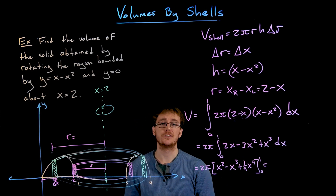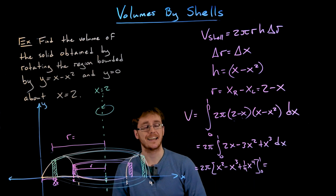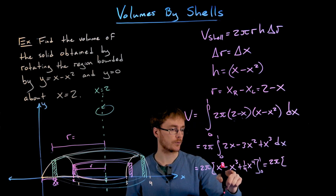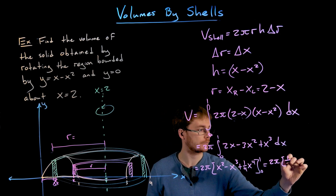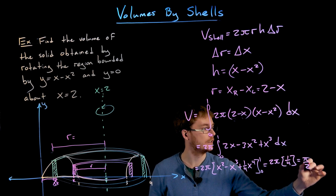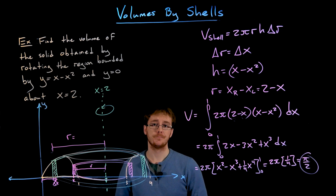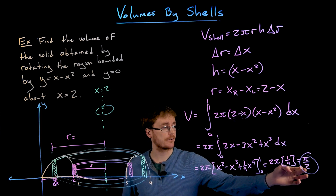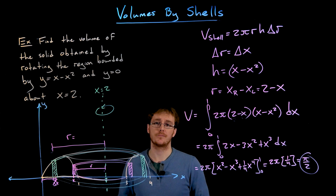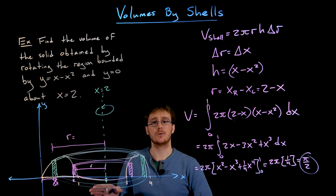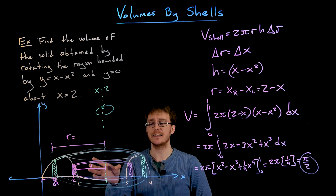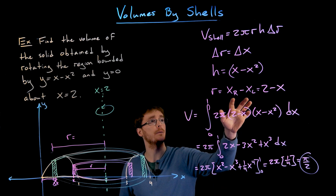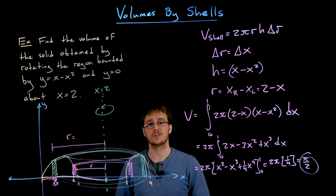Evaluating from 0 to 1 — the evaluation at 0 contributes nothing — we get 2π times (1 minus 1 plus one-fourth), which is 2π times one-fourth, simplifying to exactly π over 2. The exact volume of our solid of revolution is π over 2 cubic units. The key takeaway is that when our axis of rotation is something other than the x or y axis, we must be more careful finding the radius expression for our cylindrical shells.